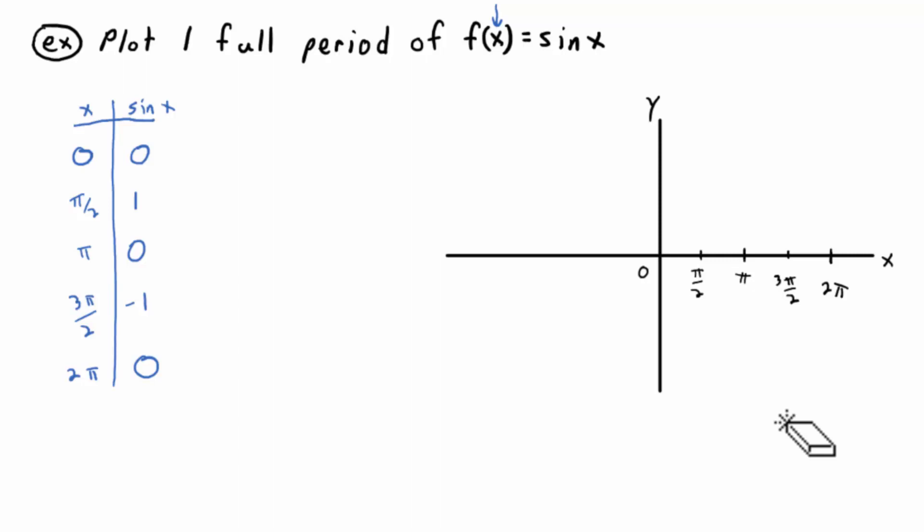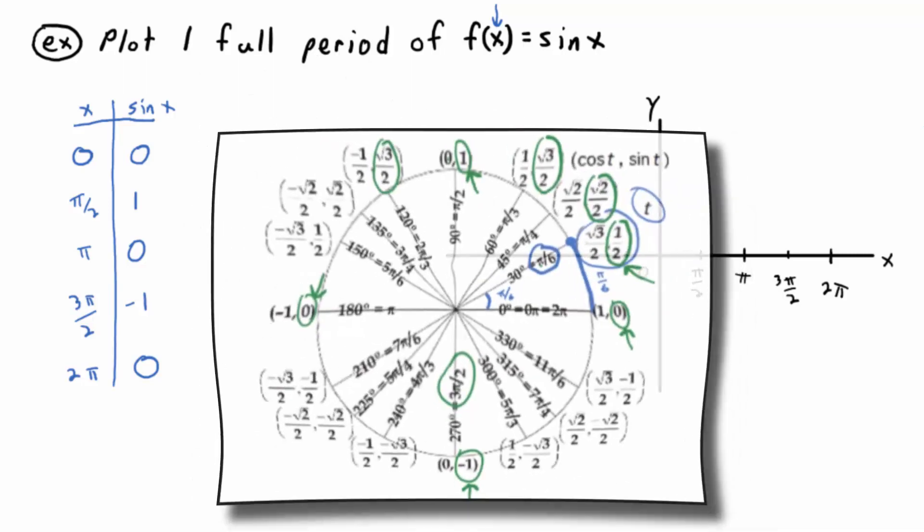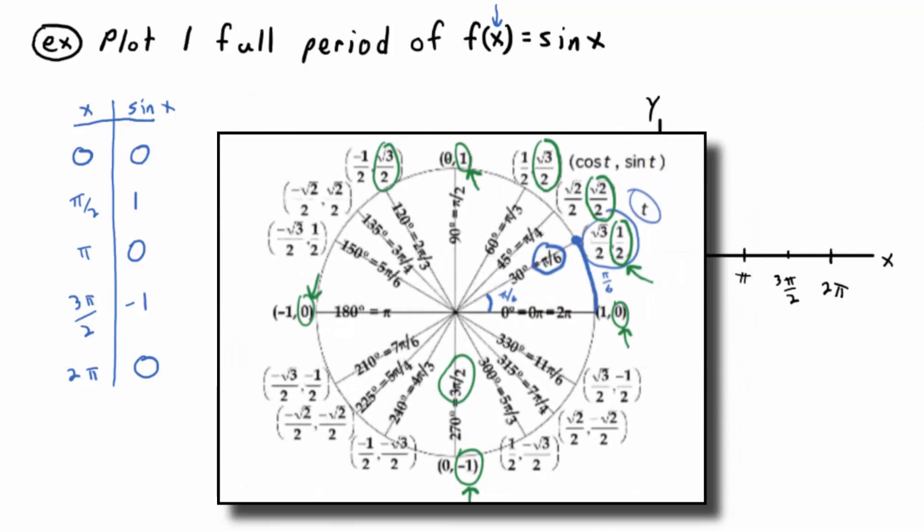What's the biggest sine is ever going to get? Well, it's never going to be bigger than the radius of the unit circle, right? So if you go back and look at the unit circle and these output points, the biggest sine can get is 1.